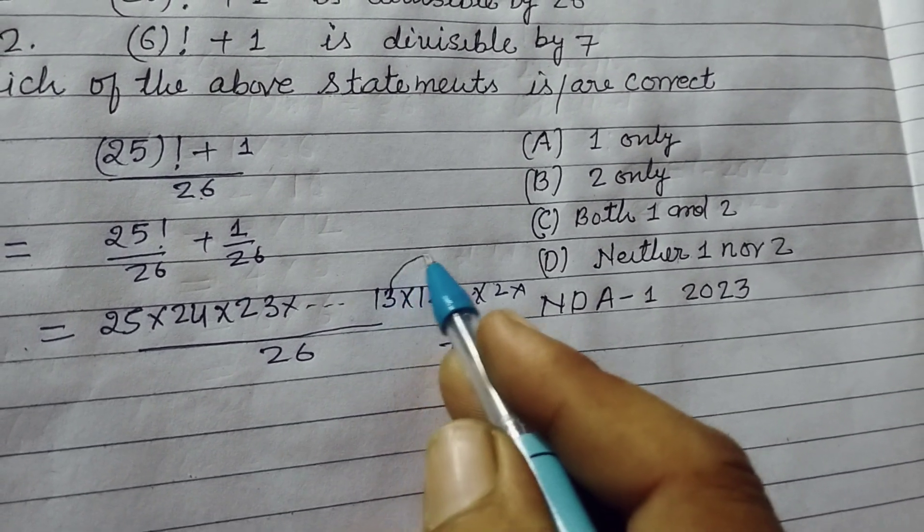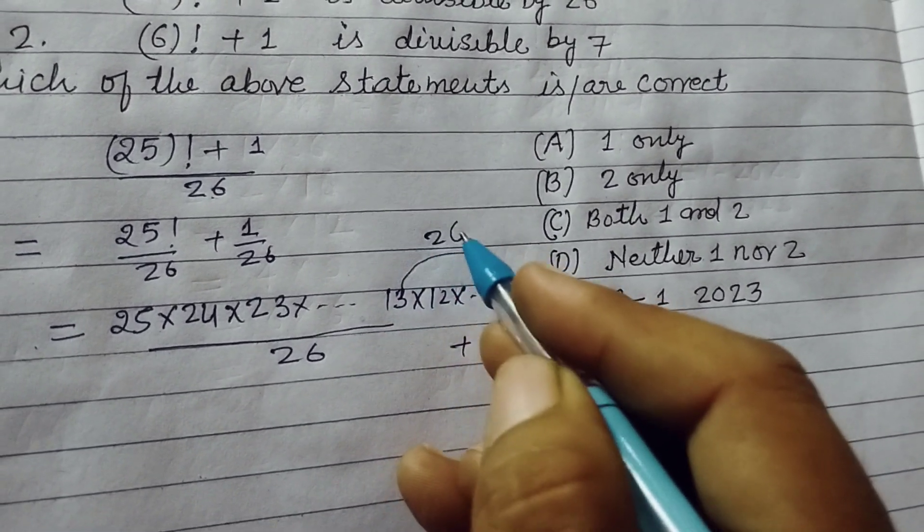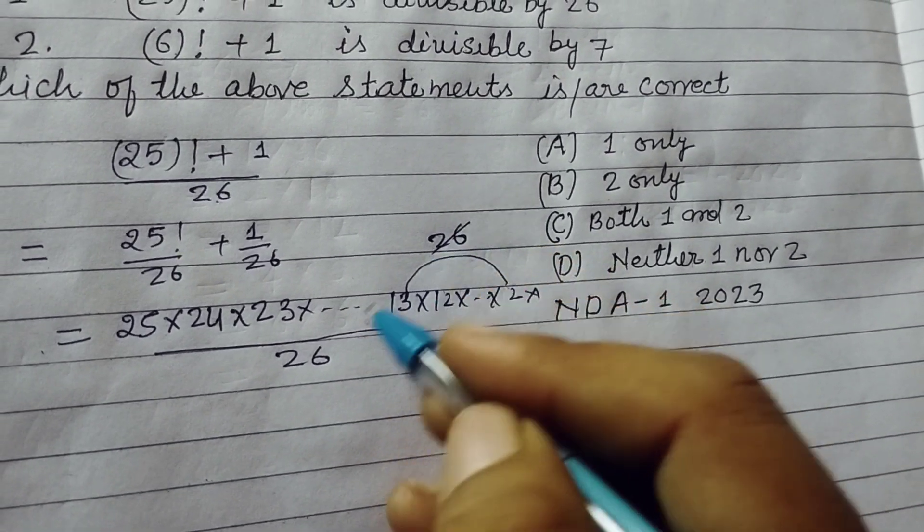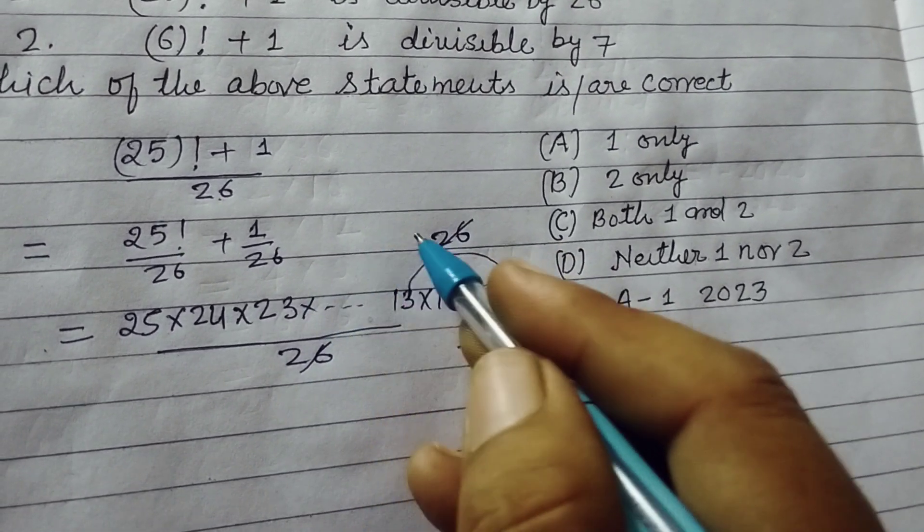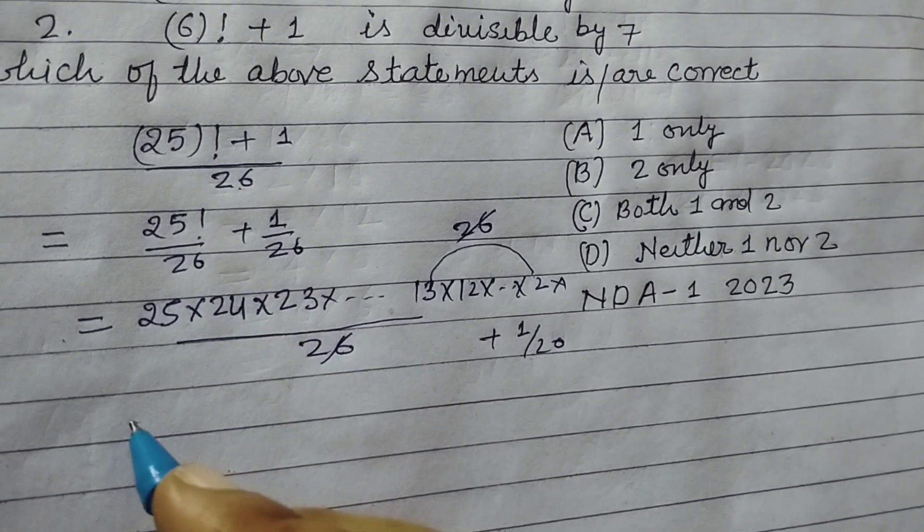Here 12 × 2 which is 26, when we divide this number by 26, it is completely divisible. This part is completely divisible by 26.